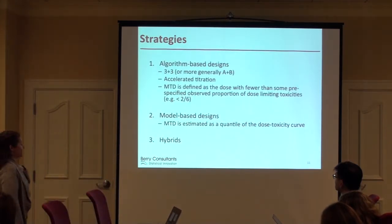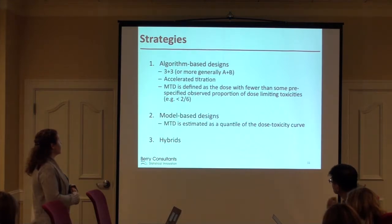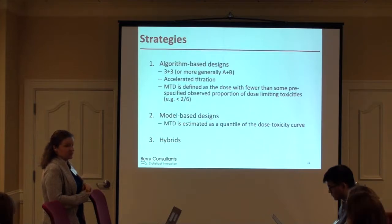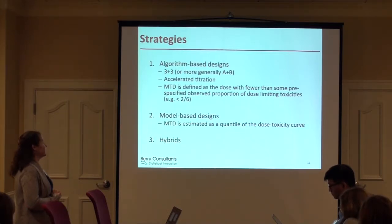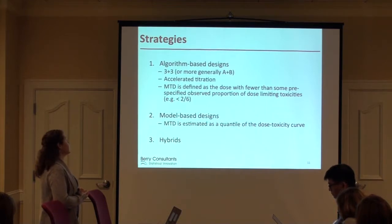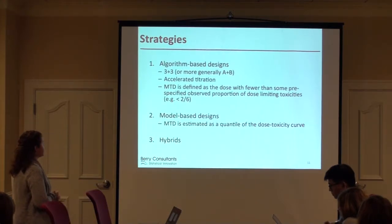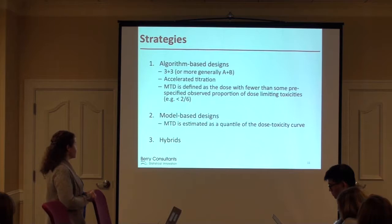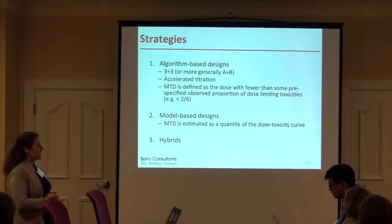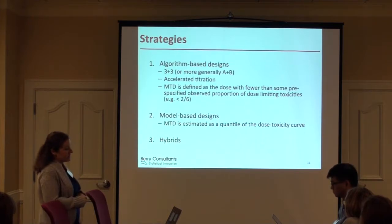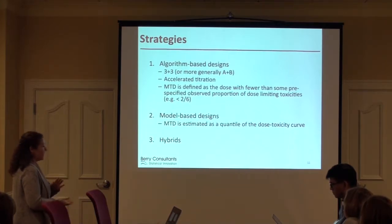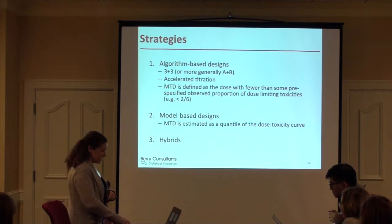There are three big buckets of strategies for phase one. Algorithm-based designs — the most common is called a three-plus-three design. In these designs, the MTD is defined strictly as the dose on which fewer than two out of six subjects have dose-limiting toxicities. Model-based designs are more sophisticated and fit a dose-response or dose-toxicity curve, then estimate the MTD as a quantile of that curve. And there are some hybrid models between these, which I'll just mention briefly.